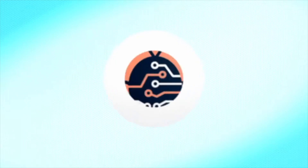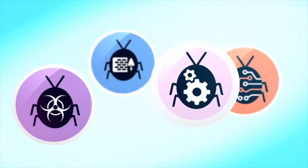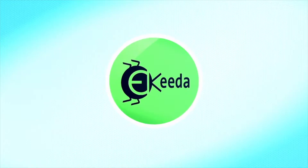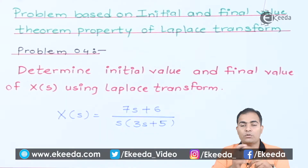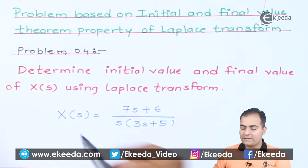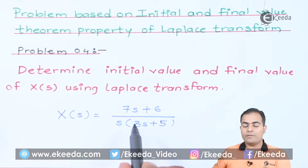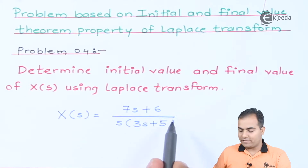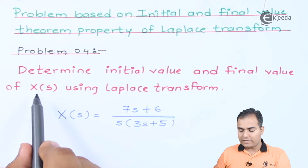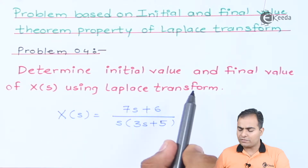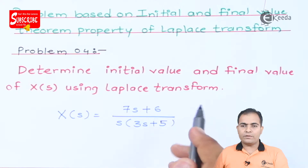Let's see how to find the initial value and final value of X(s). The question is: X(s) equals (7s + 6) divided by s times (3s + 5). We have to find the initial value and final value of X(s) using the Laplace transform.